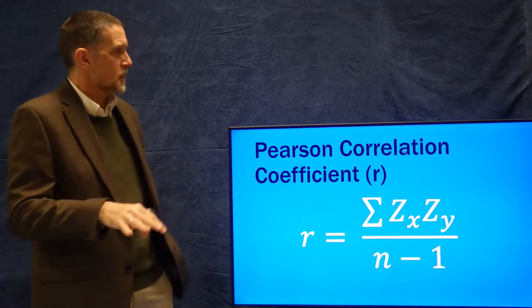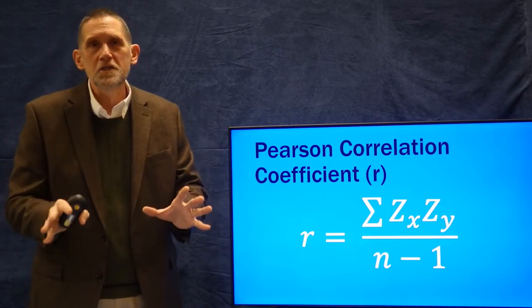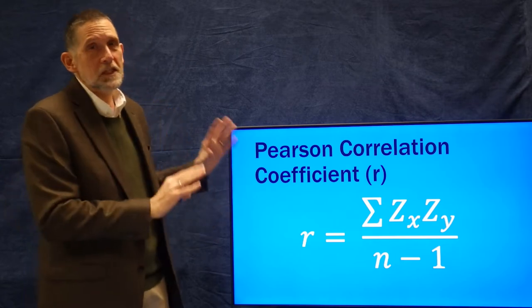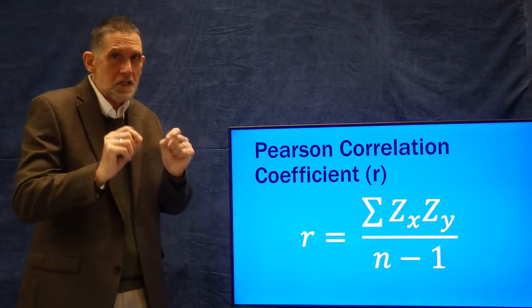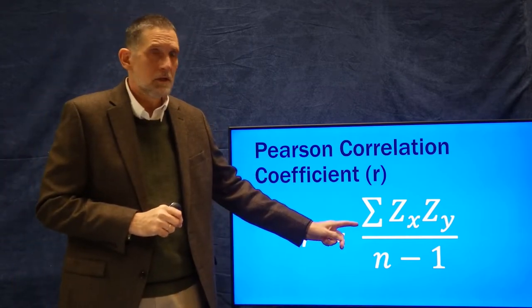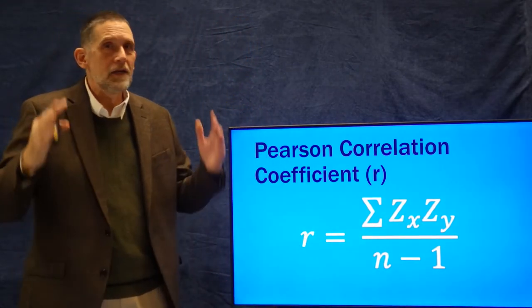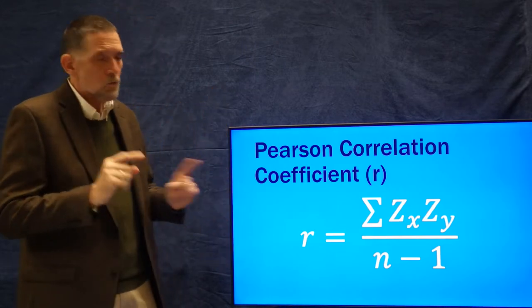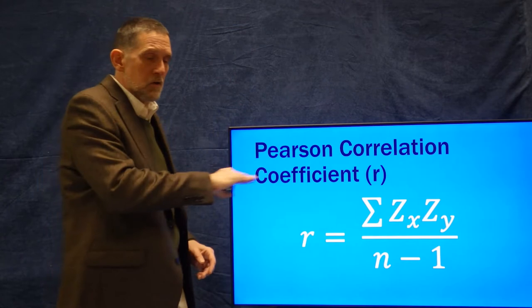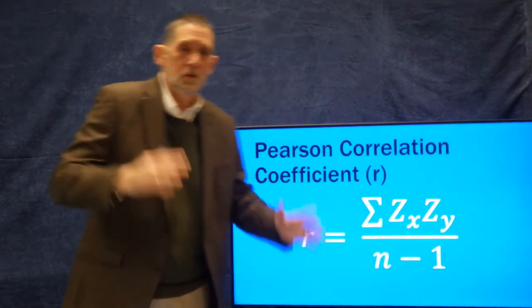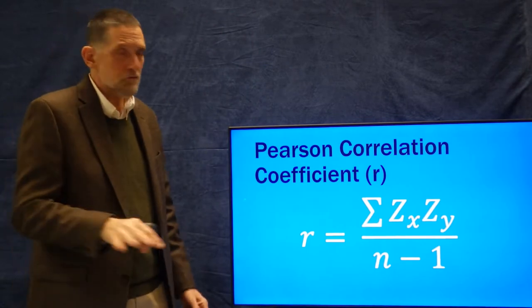Now let's talk about the Pearson correlation coefficient formula — this is the last formula for a while. It's not a difficult formula: it's a sum of some things over n, which is an average — a mean. What are those things? We have two z-scores: a z-score on one variable and a z-score on another variable, multiplied together, all summed up and divided by n — in this case n minus one, accounting for degrees of freedom.